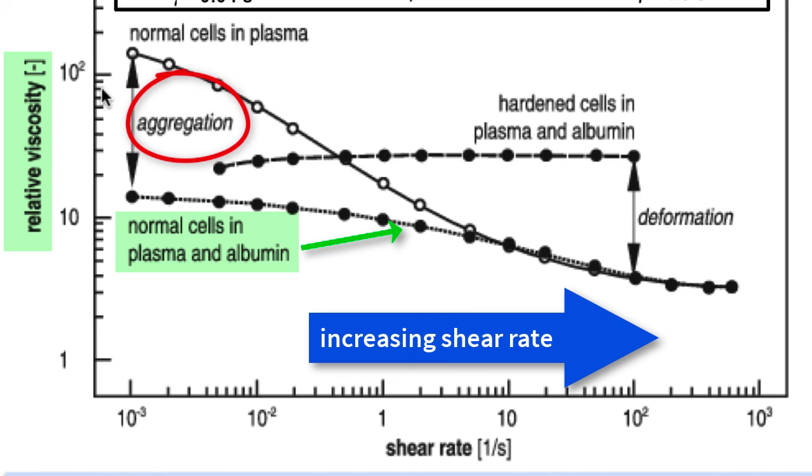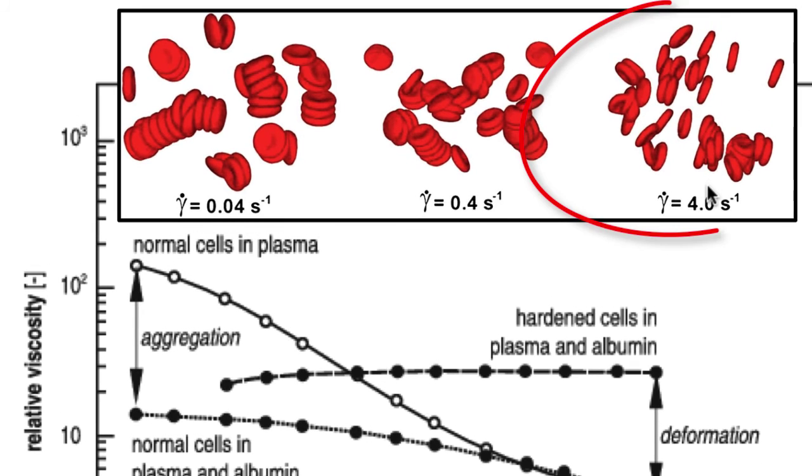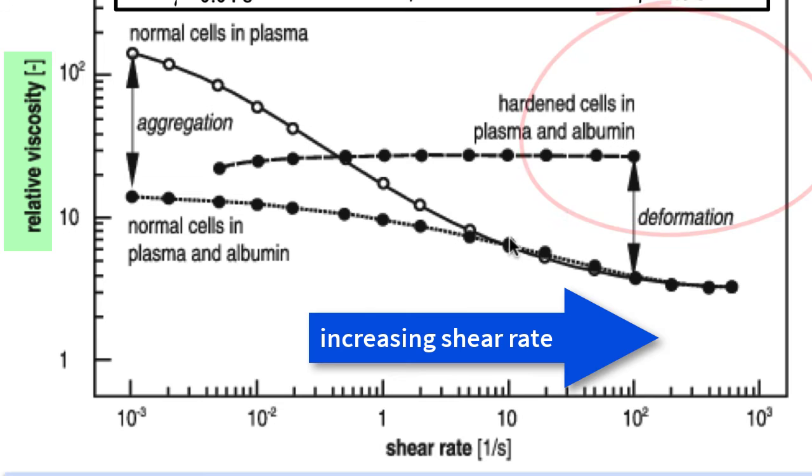Suggesting that the ability of the red blood cells to aggregate contributes to the higher viscosity at low shear rate. But at higher shear rates, these aggregates break up. So the viscosity at higher shear rates is the same, whether albumin is added or not.